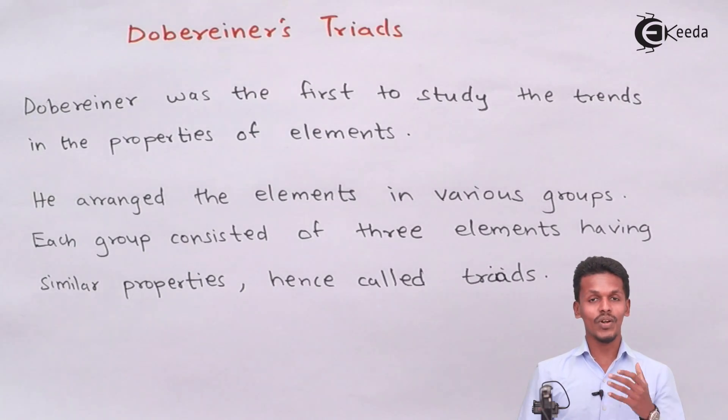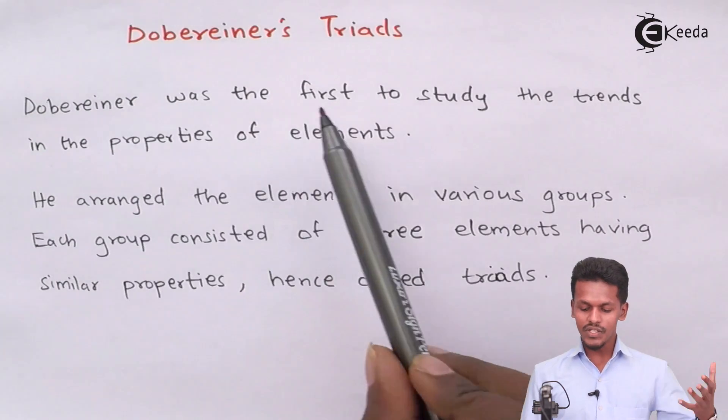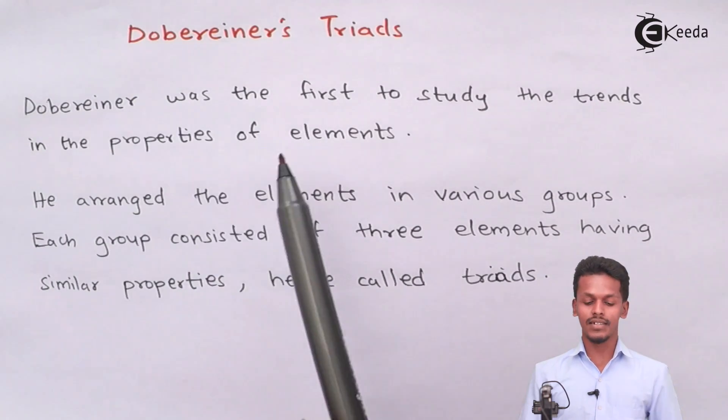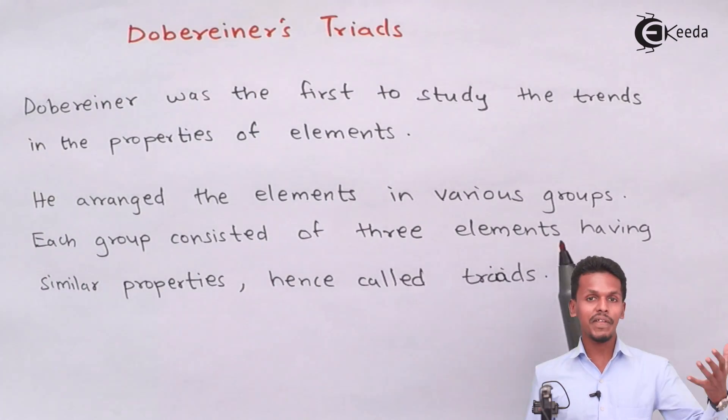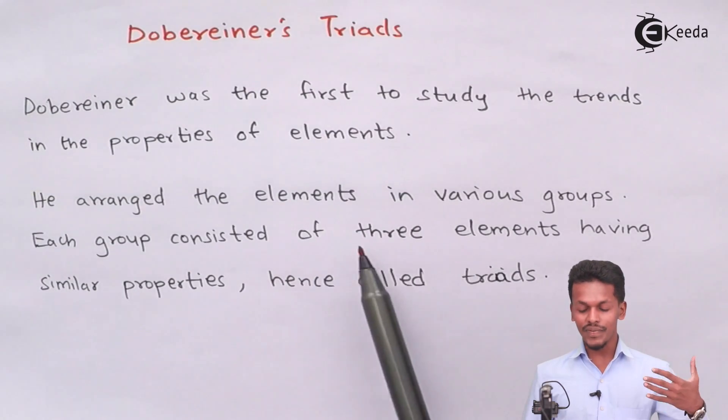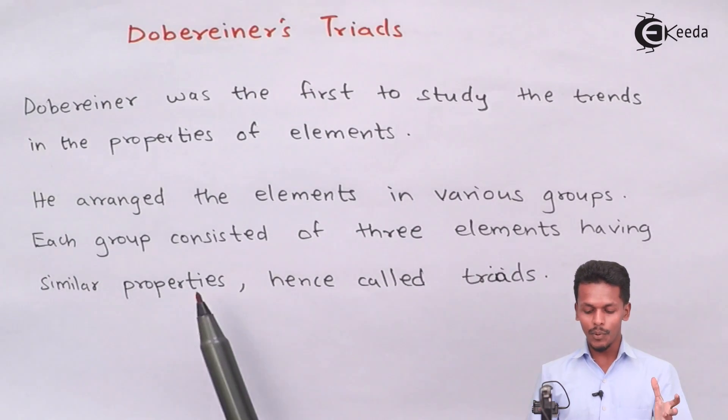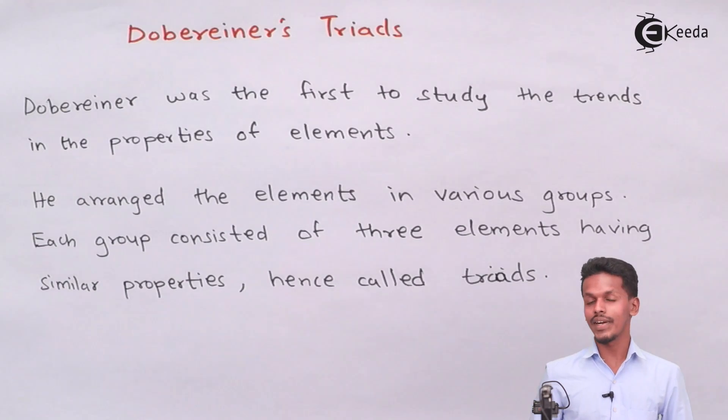So now we are going to talk about what is Dobereiner's triad. Dobereiner was the first to study the trends in the properties of elements. He arranged the elements in various groups and each group consisted of three elements having similar properties and they are known as triads.